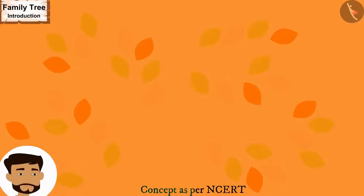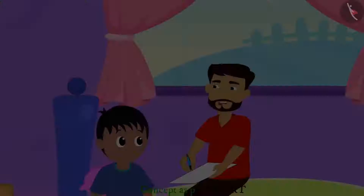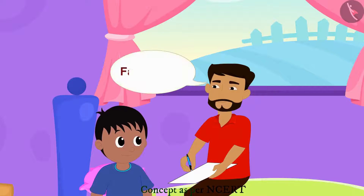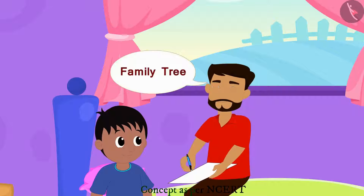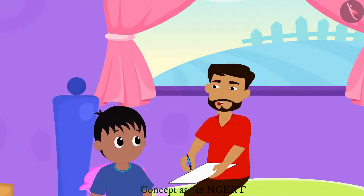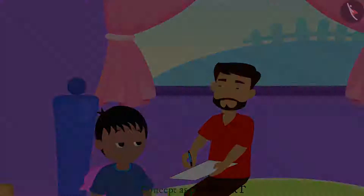Raju's father started making his family tree on a paper. Raju asks what he is making, and the father explains he is making their family tree. When Raju asks what that is, the father explains that a family tree is a picture in which we depict all the relatives of our family.